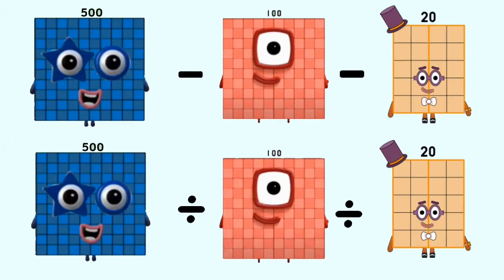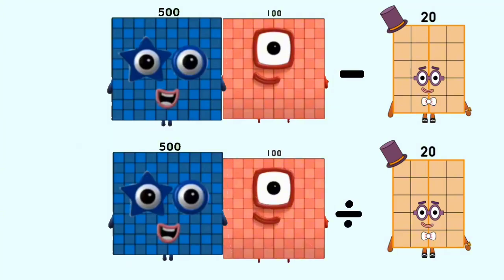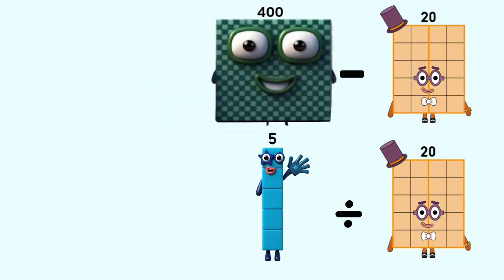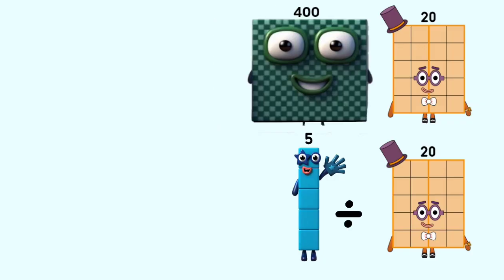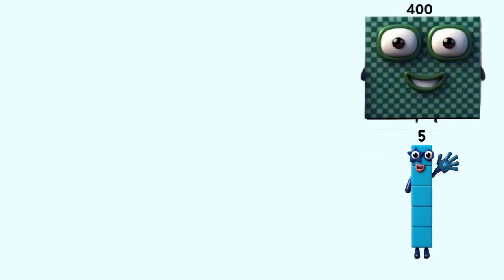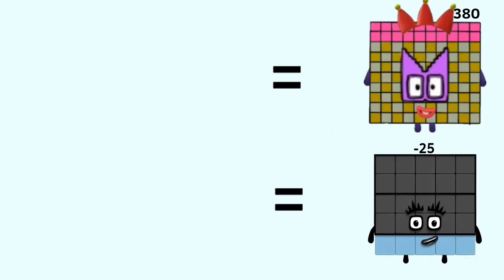Number blocks 500 minus 100 and divided by 100 equal 400 and 5. Number blocks 500 and 5 minus 20 and divided by 20 equal 380 and negative 25.